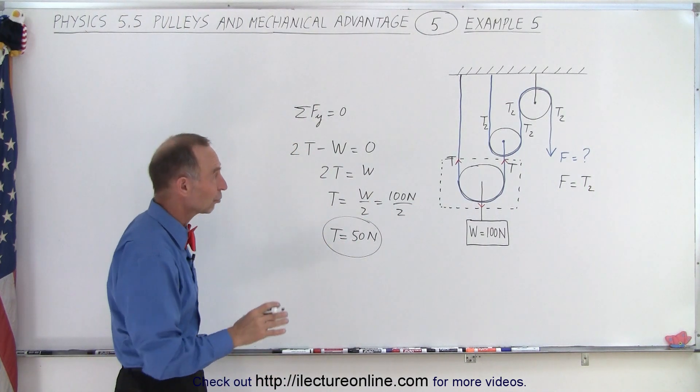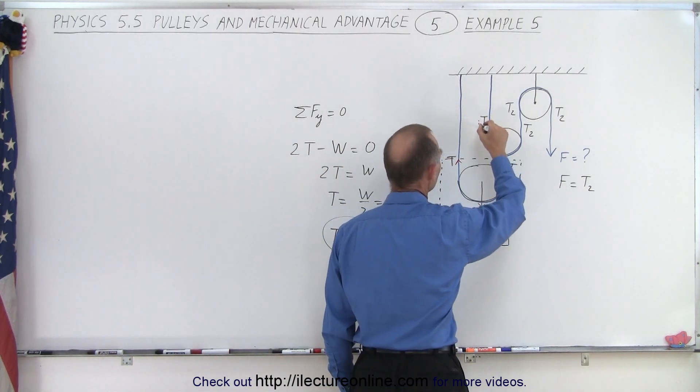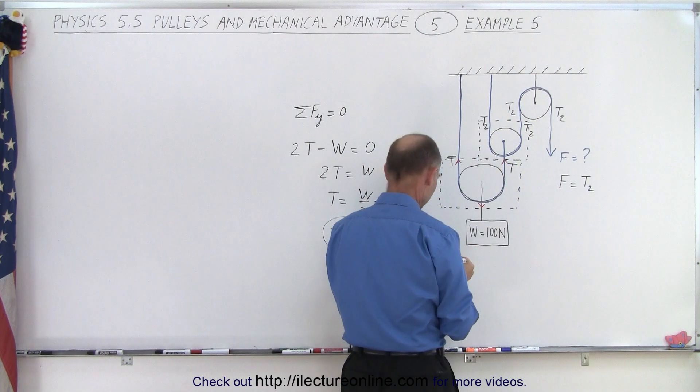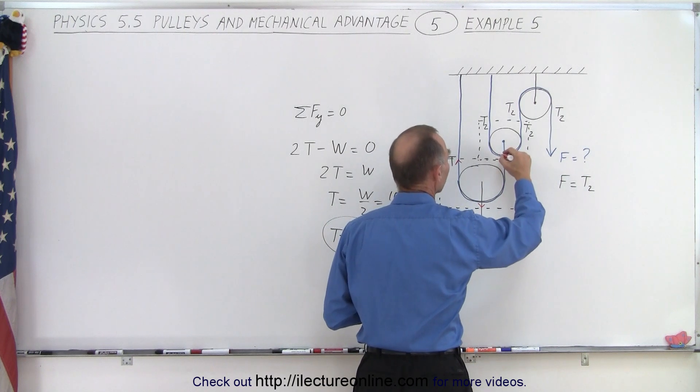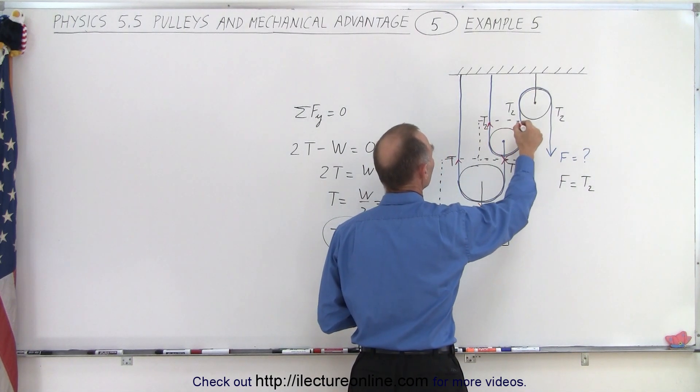All right but now we need to determine tension 2. So what we're going to do now is draw a free body diagram around this pulley. And then you can see that we have relative to this pulley a force pulling down this way and relative to this pulley we have two forces pulling upward.